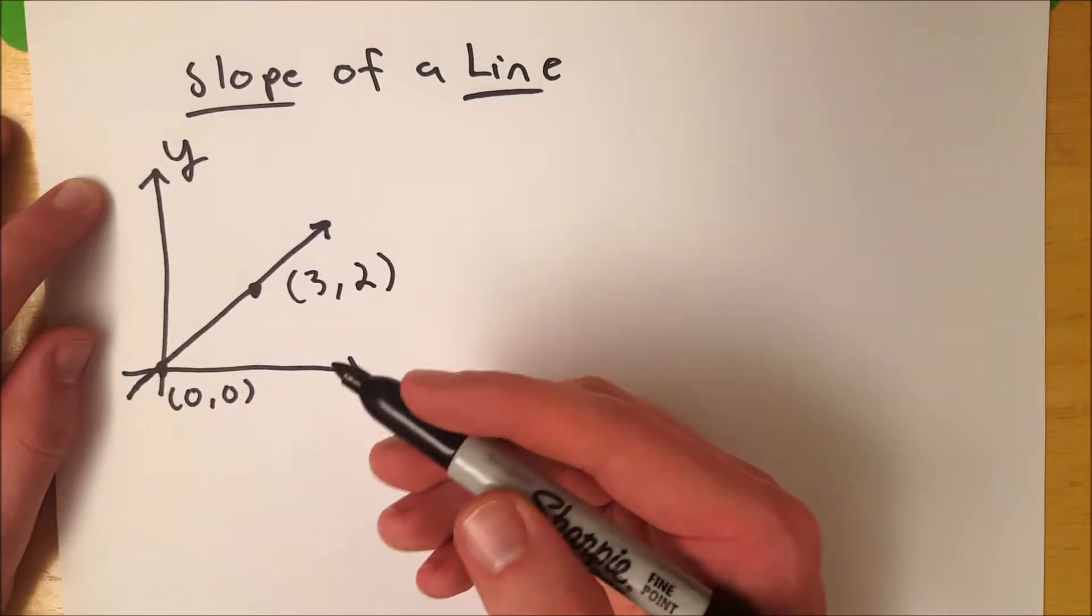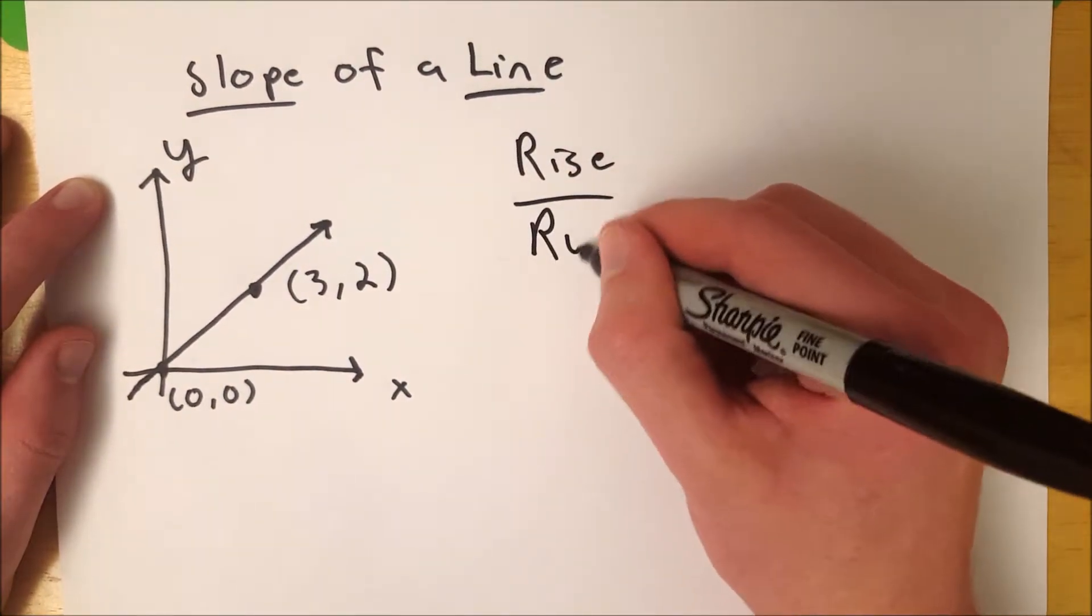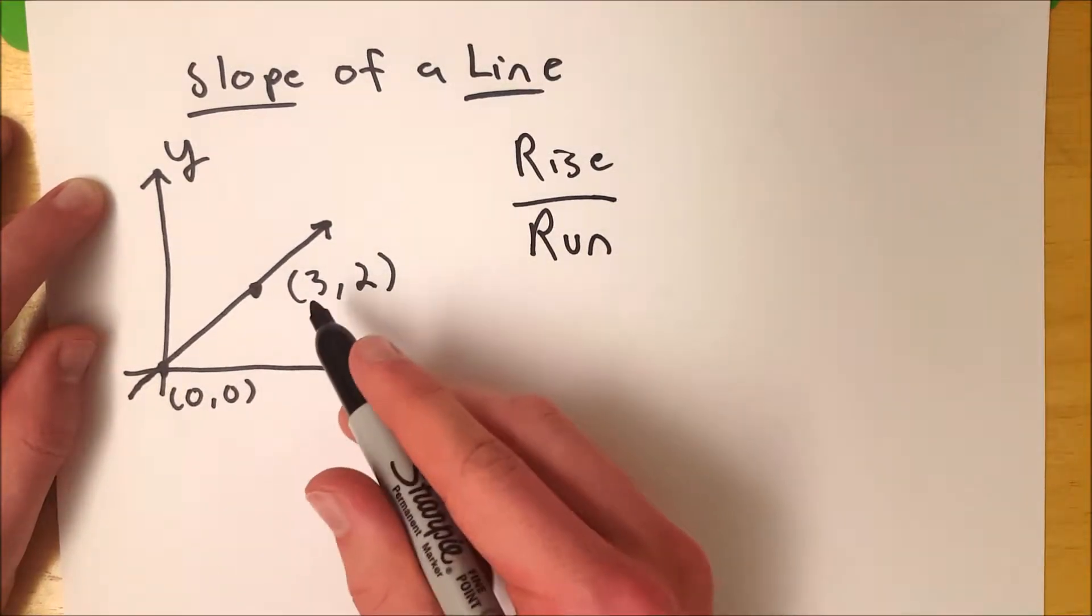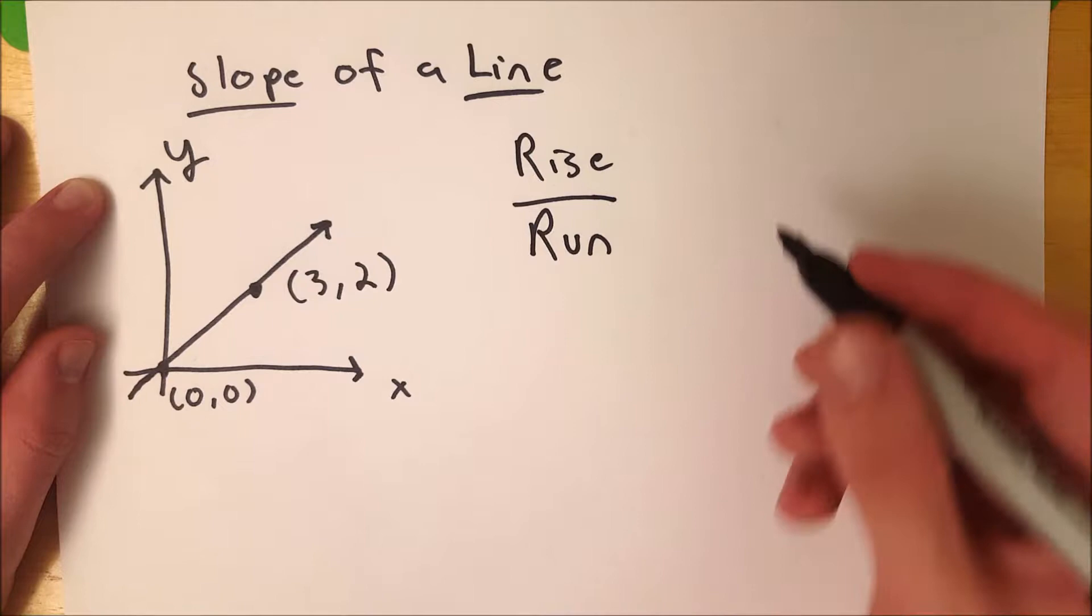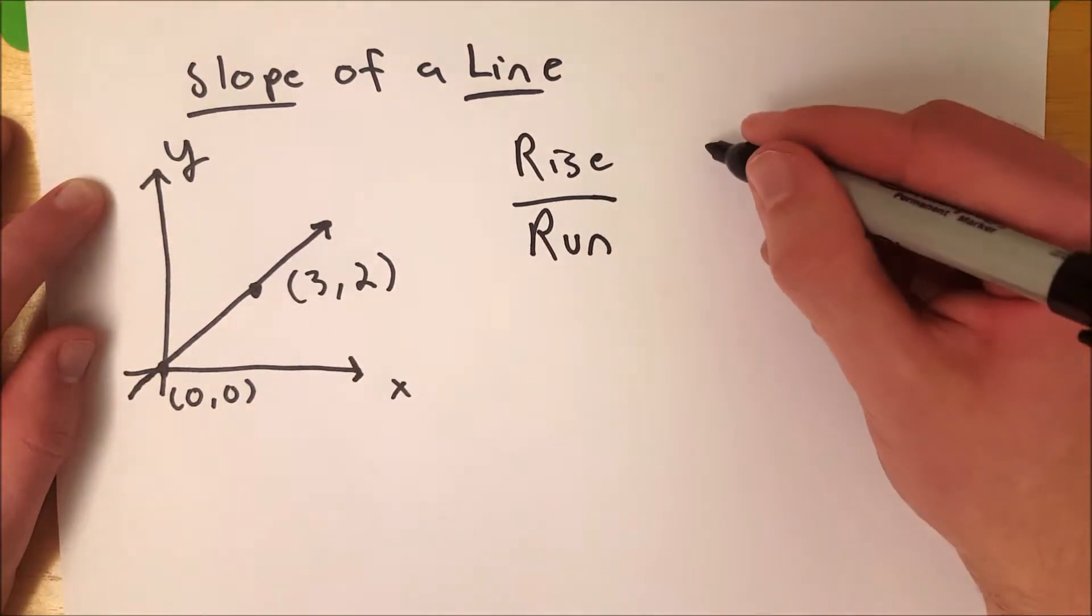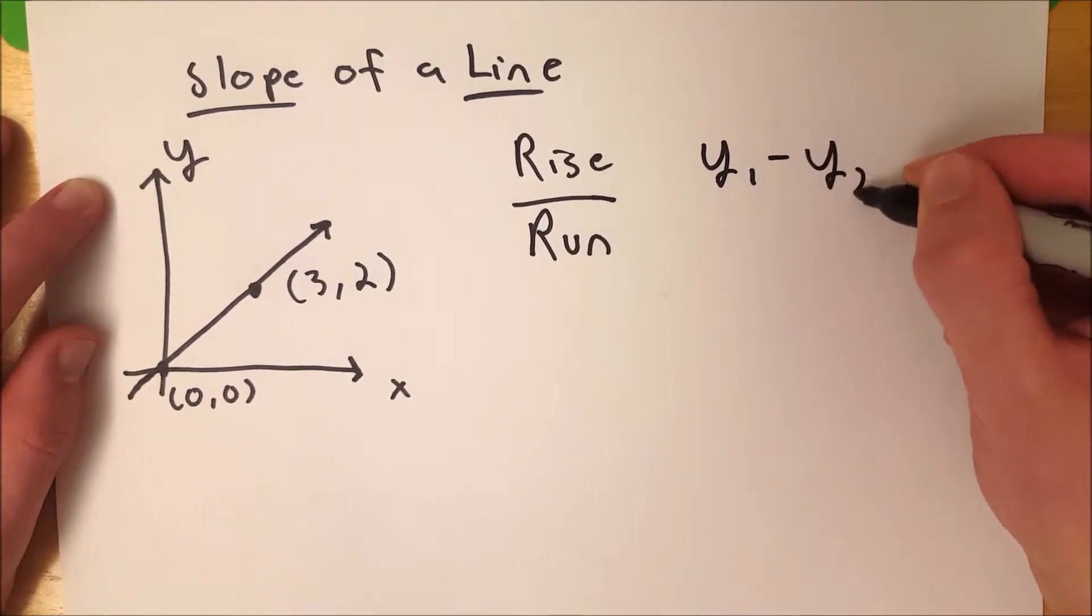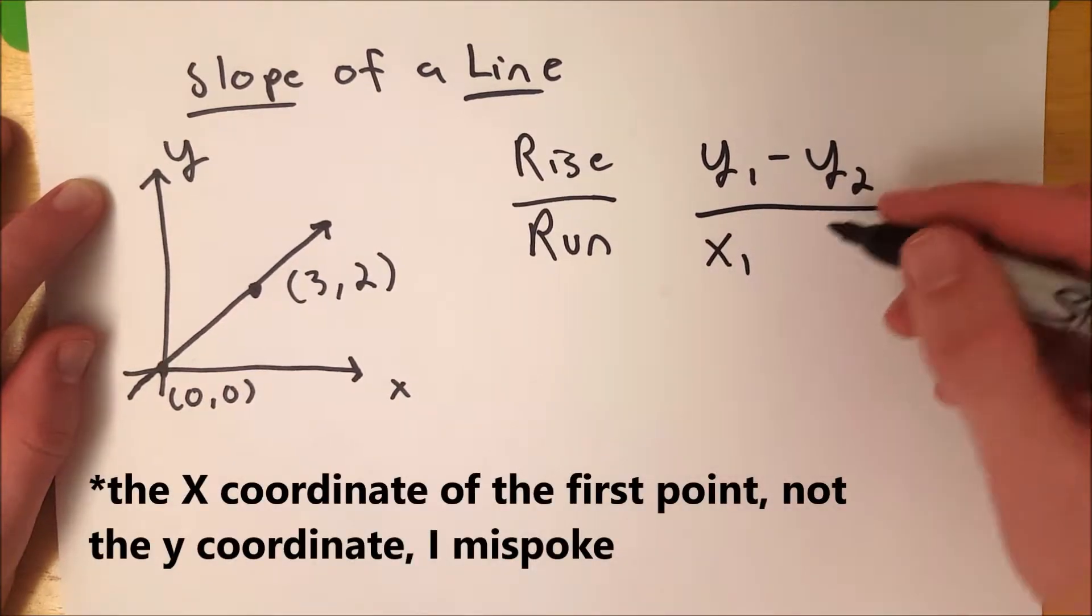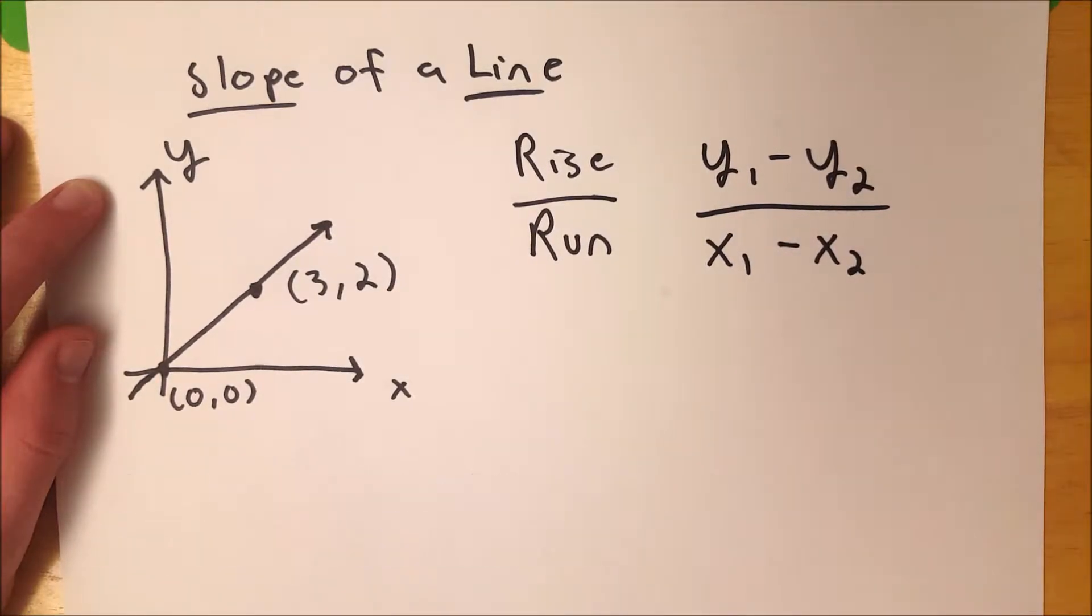So what is the slope of this line? Well slope is rise over run. To find the rise over run of this line, we need the change in y from here to here, over the change in x from here to here. And you can represent this as y1, the y coordinate of the first point, minus y2, the y coordinate of the second point, over x1, the x coordinate of the first point, minus x2, the x coordinate of the second point.